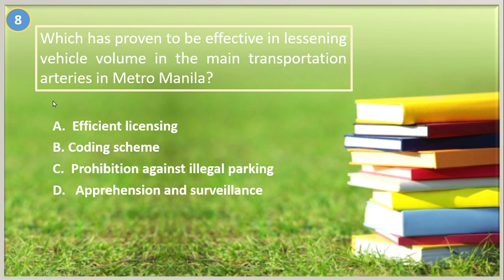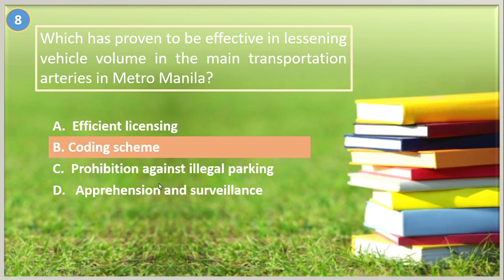Number eight. Which has proven to be effective in lessening vehicle volume in the main transportation arteries in Metro Manila? A. Efficient licensing, B. Coding scheme, C. Prohibition against illegal parking, D. Apprehension and surveillance. The answer is letter B, coding scheme.